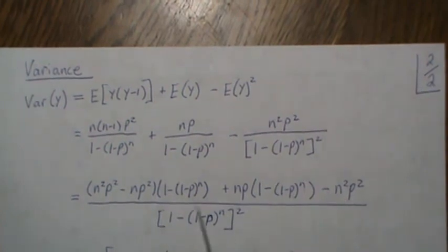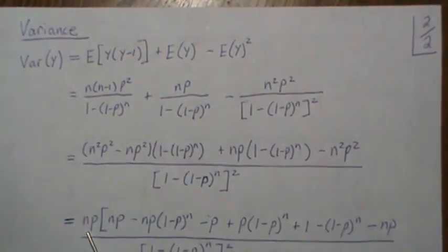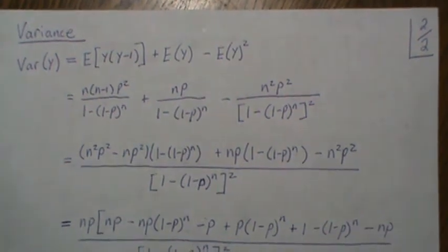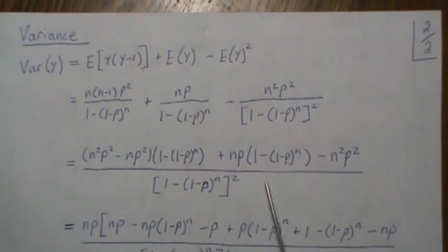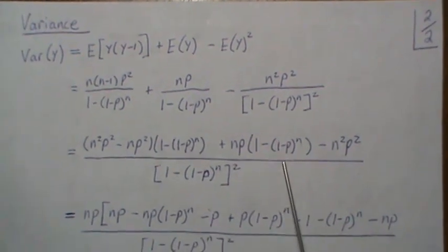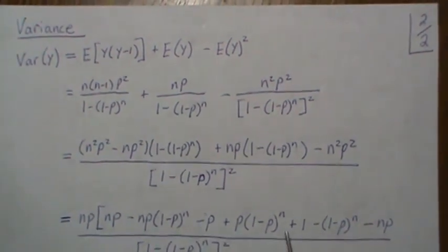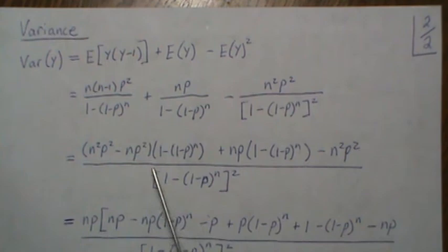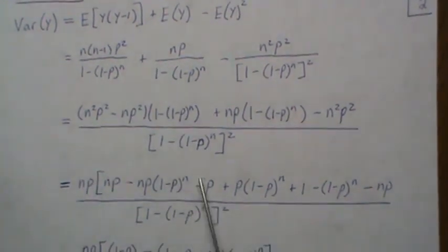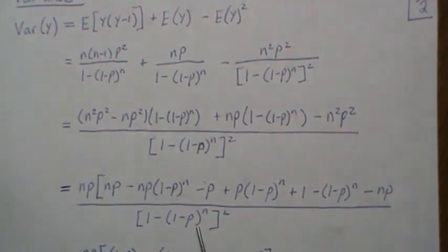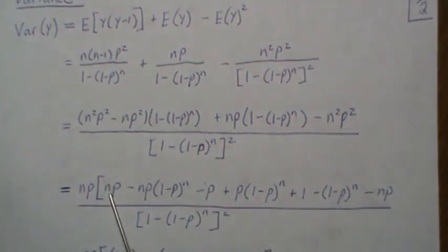In here there's an np common in all the terms, so we factor it out and then we multiply it through. This piece going backwards is this - the np was factored out, so we get this. And when you multiply this through, you get this piece here, over the same denominator.